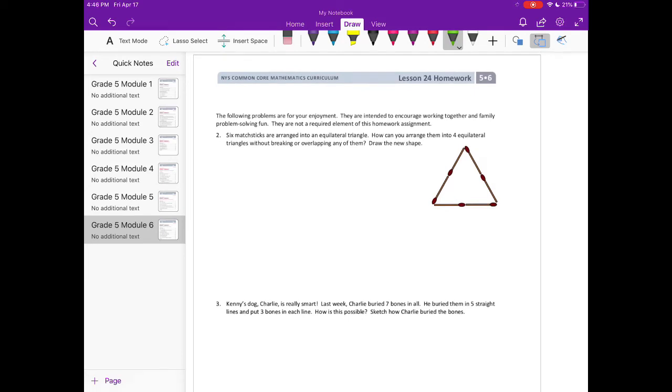The following problems are for your enjoyment. They are intended to encourage working together and family problem-solving fun. They are not a required element of this homework assignment. Six matchsticks are arranged into an equilateral triangle. How can you arrange them into four equilateral triangles without breaking or overlapping any of them? Draw the new shape. This one's actually very tricky; you have to think more four-dimensional.